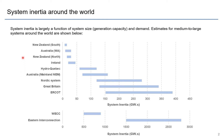On the small end of the scale — less than about 50 gigawatt seconds — we have systems like the two New Zealand systems (North and South Island), which are interconnected by an HVDC interconnector, the West Australian system, and Ireland. These are all small island systems. As you get bigger, you have Hydro-Quebec in Canada, the eastern Australian system, and the Nordic, Great Britain, and ERCOT systems in Texas. Off the scale are the western and eastern interconnections in the US, at 500–1,000 and 1,500–2,800 gigawatt seconds respectively.